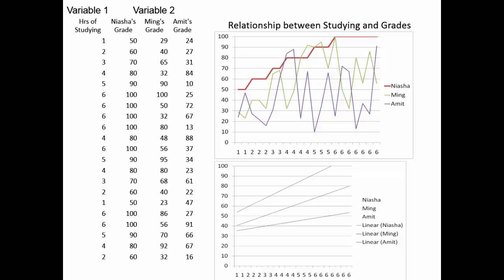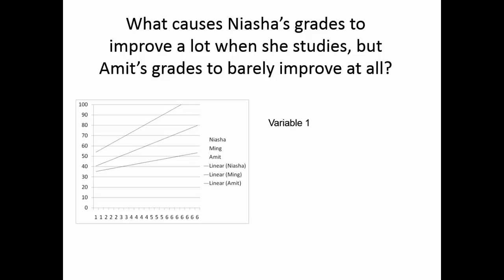What we care about is what caused Nyesha's grades to improve a lot when she studied, but Amit's grades barely improved at all. It could be anything — Nyesha has better study habits, organizes her material better, isn't doing other things while studying, or they're taking different classes and the professor gives Amit bad lecture notes. So the relationship here might not have anything to do with Nyesha and Amit individually — it might very well have to do with some third factor.